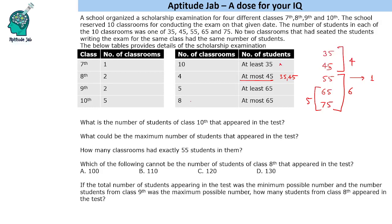The last piece of information is that 8 classrooms have at most 65 students, meaning a maximum of 65. So we have 8 classrooms covering 35, 45, 55, and 65 categories. With 10 total classrooms, that means there are 2 classrooms with 75 students. Since we know 6 classrooms cover the 35 and 45 group, there will be 3 classrooms with 65 students. However, the split between 35 and 45 (whether it's 1 and 3, 2 and 2, or 3 and 1) cannot be uniquely determined.